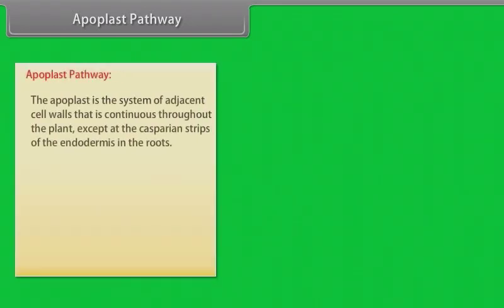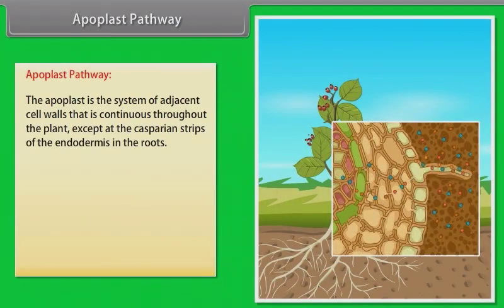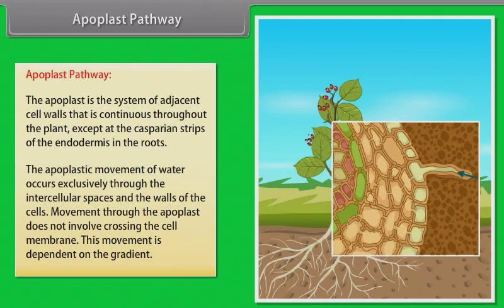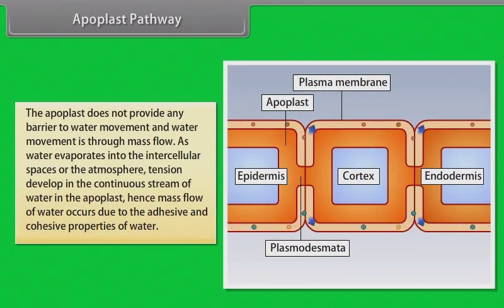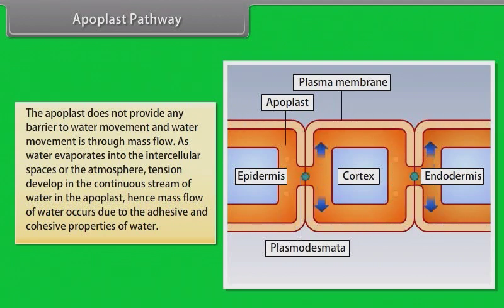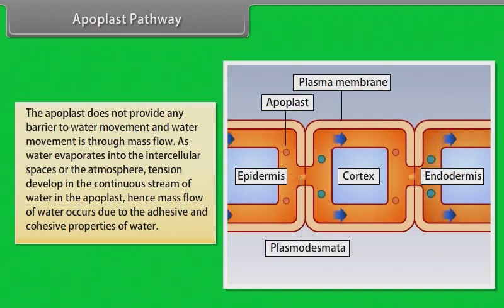Apoplast pathway. The apoplast is the system of adjacent cell walls that is continuous throughout the plant, except at the Casparian strips of the endodermis in the roots. The apoplastic movement of water occurs exclusively through the intercellular spaces and the walls of the cells. Movement through the apoplast does not involve crossing the cell membrane and is dependent on the gradient. The apoplast does not provide any barrier to water movement, and water movement is through mass flow. As water evaporates into the intercellular spaces or the atmosphere, tension develops in the continuous stream of water in the apoplast. Hence, mass flow of water occurs due to the adhesive and cohesive properties of water.